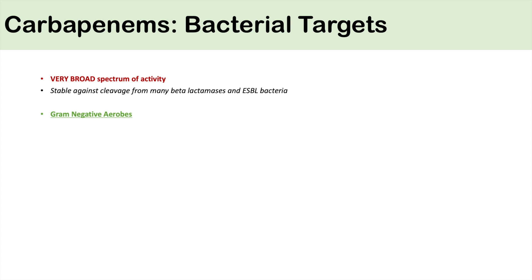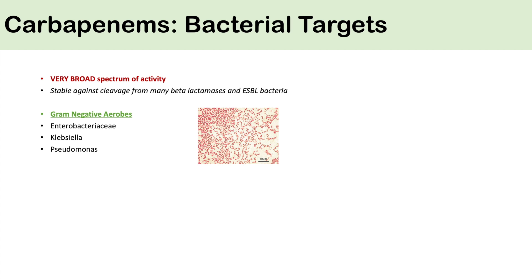For the most part, you're going to use carbapenems to cover a broader spectrum of gram-negative aerobes in particular. These include the Enterobacteriaceae, Klebsiella, and Pseudomonas. When you're using a carbapenem, you're essentially covering a wide swath of gram-negative bacteria — in particular, you're covering for Pseudomonas. It can also cover Neisseria as well.